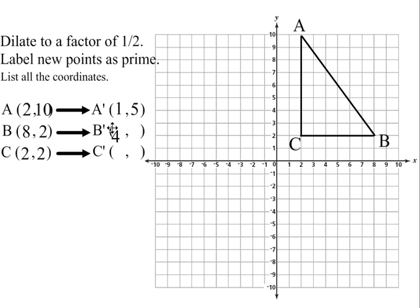Half of 8 is 4, and half of 2 is 1. So the coordinates for B' are 4 and 1. Half of 2 is 1, and half of the y-coordinate for C is also 1.